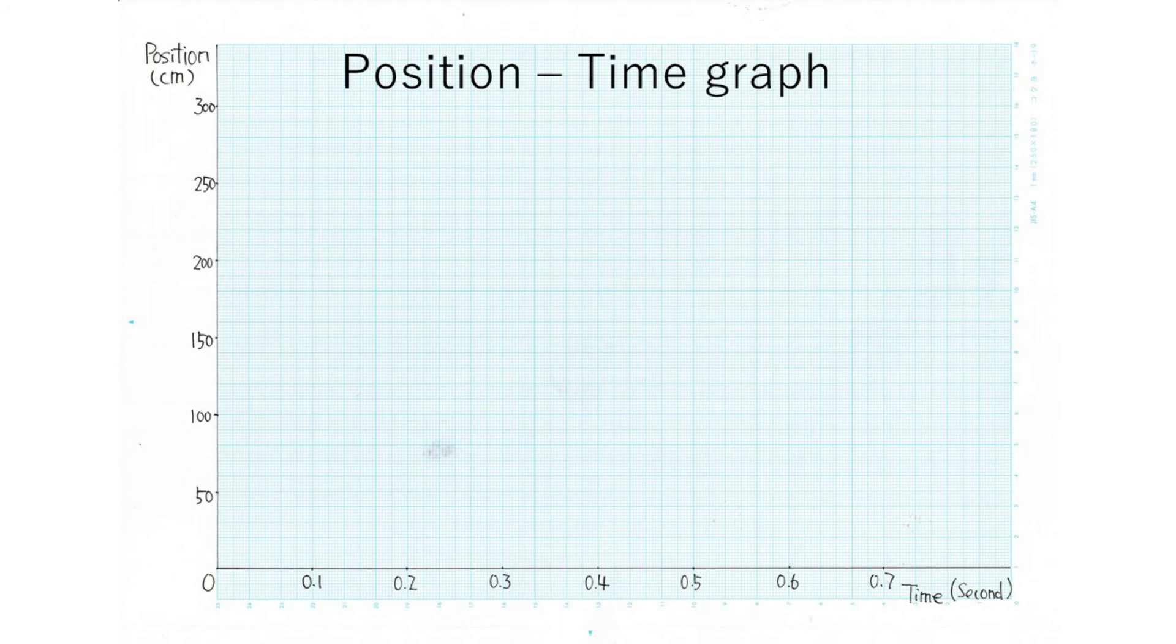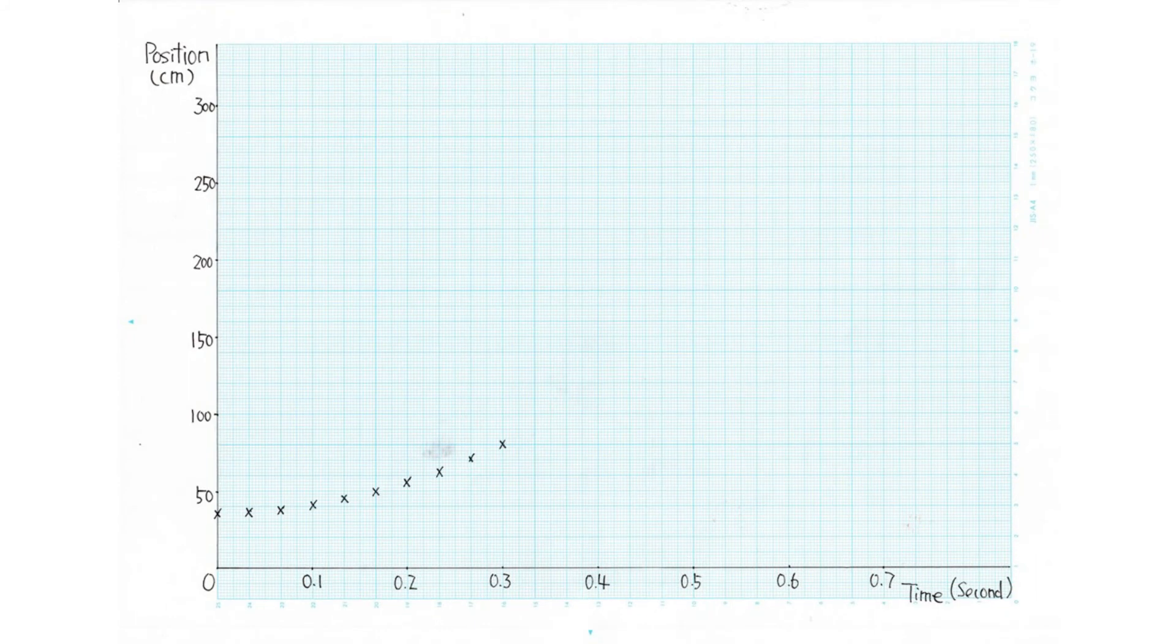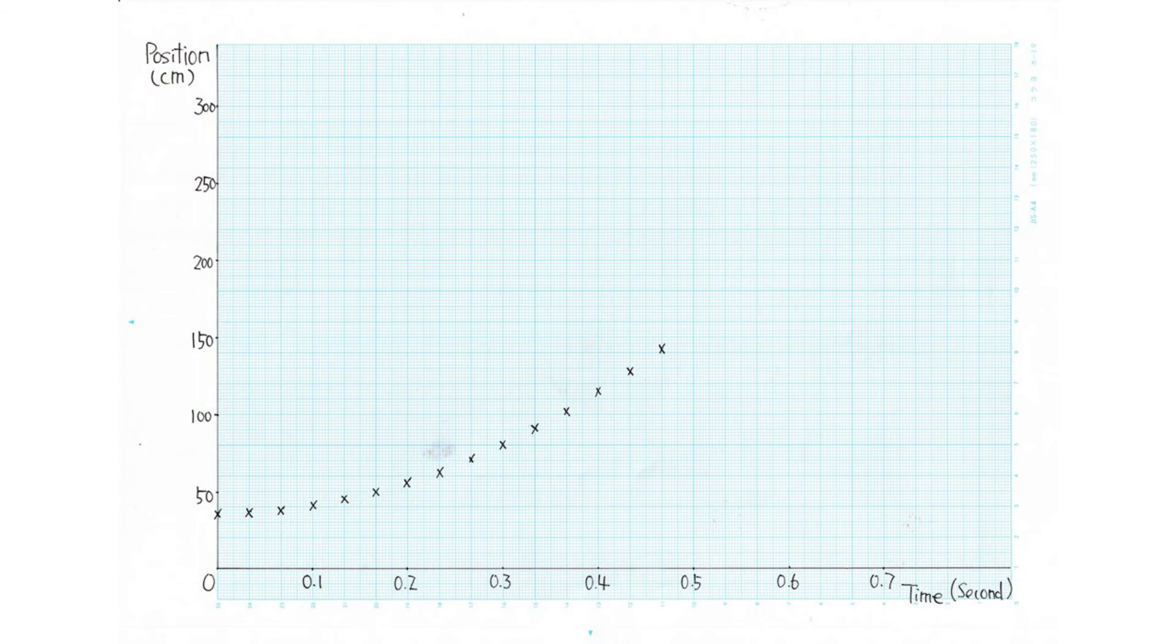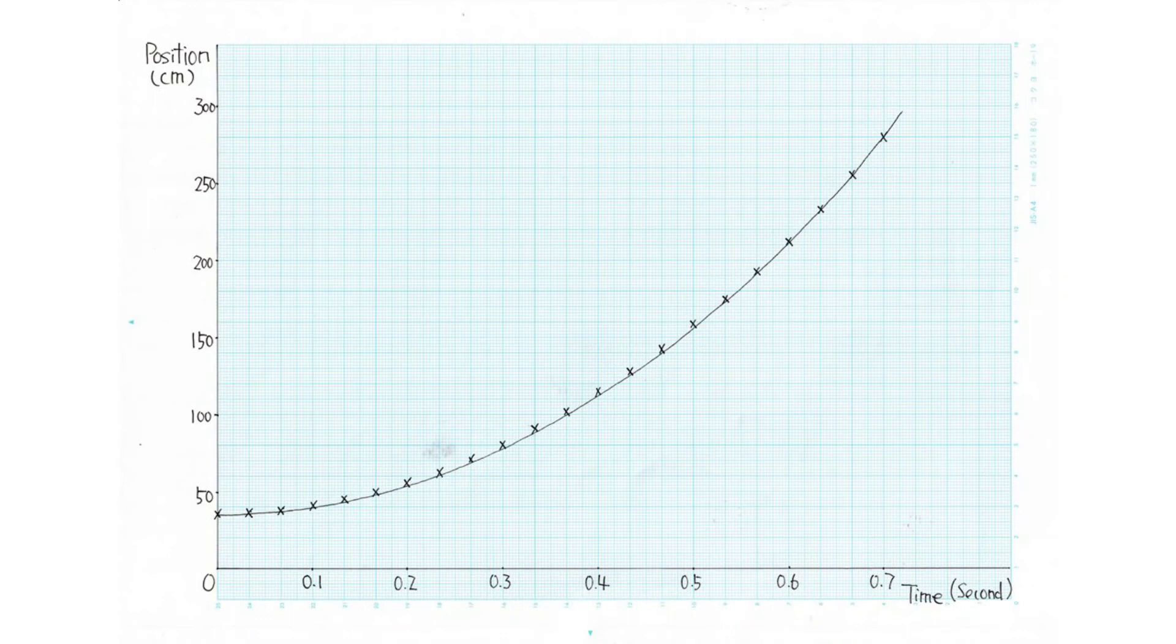Let's draw a graph of position and time. Let's draw a graph of velocity. It shows a quadratic curve.